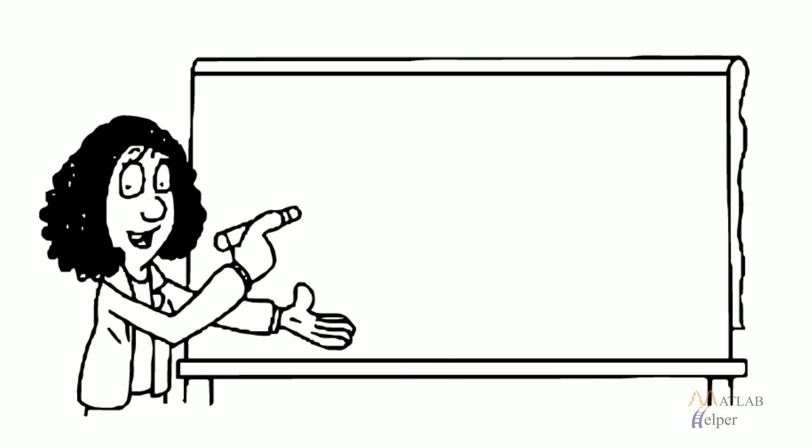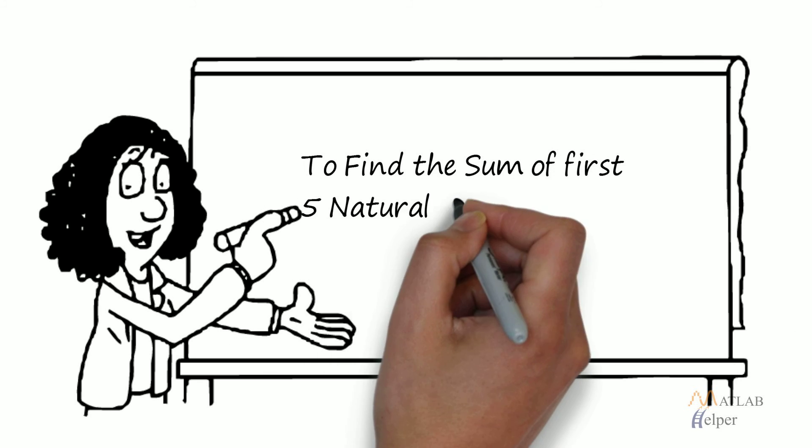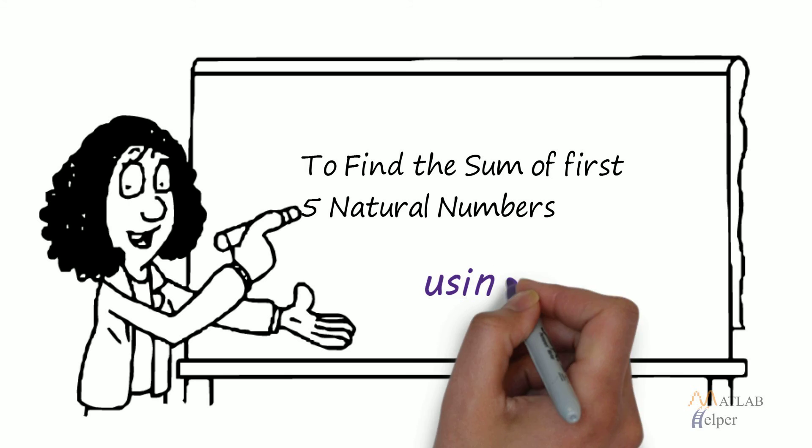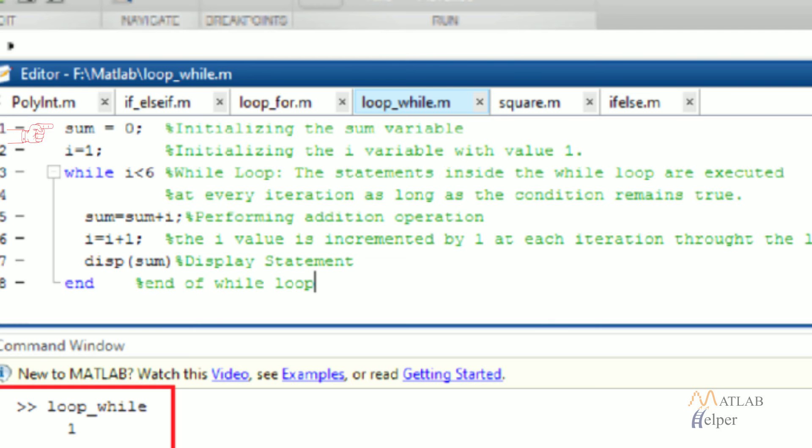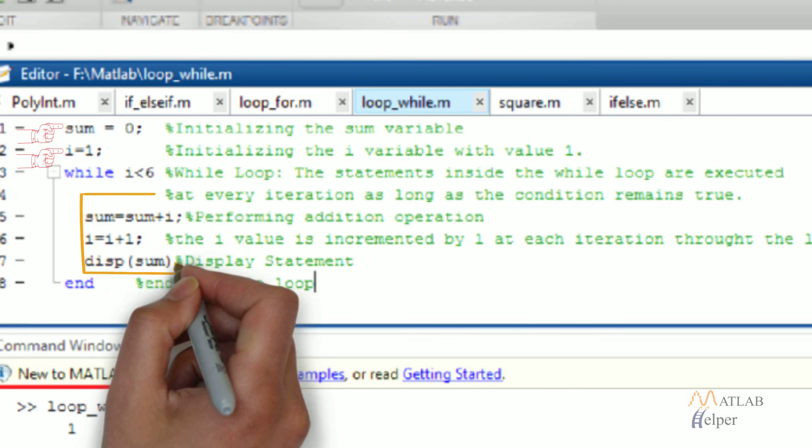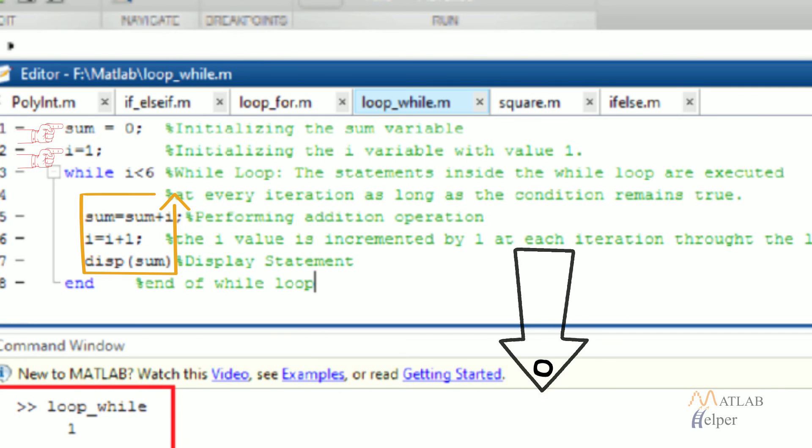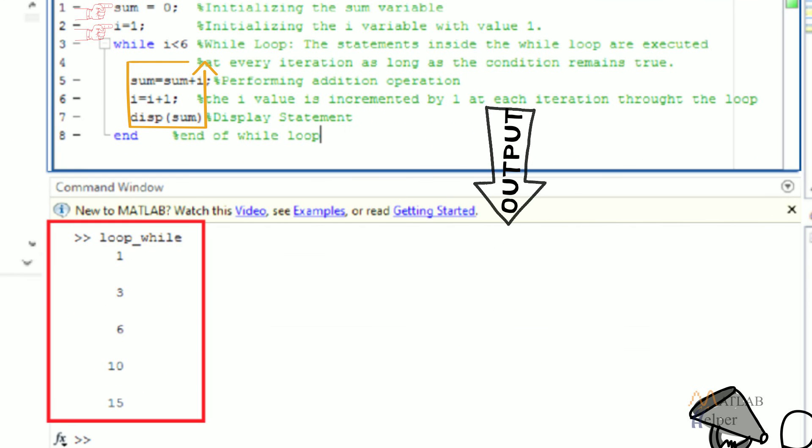Example: We will perform the same example we used for explaining for loop but now using the while loop. In the given example, we have initialized the variable sum=0 and the variable i=1, which is used in the expression to repeat the execution of statements inside the while loop.